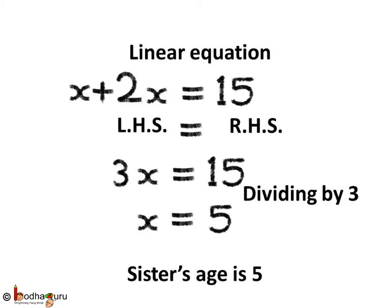Here we get a linear equation: x plus 2x equals 15. In this equation there is only one variable, which is x. In a linear equation, the left hand side is equal to the right hand side. Solving the left hand side, x plus 2x equals 3x. So we get 3x is equal to 15.